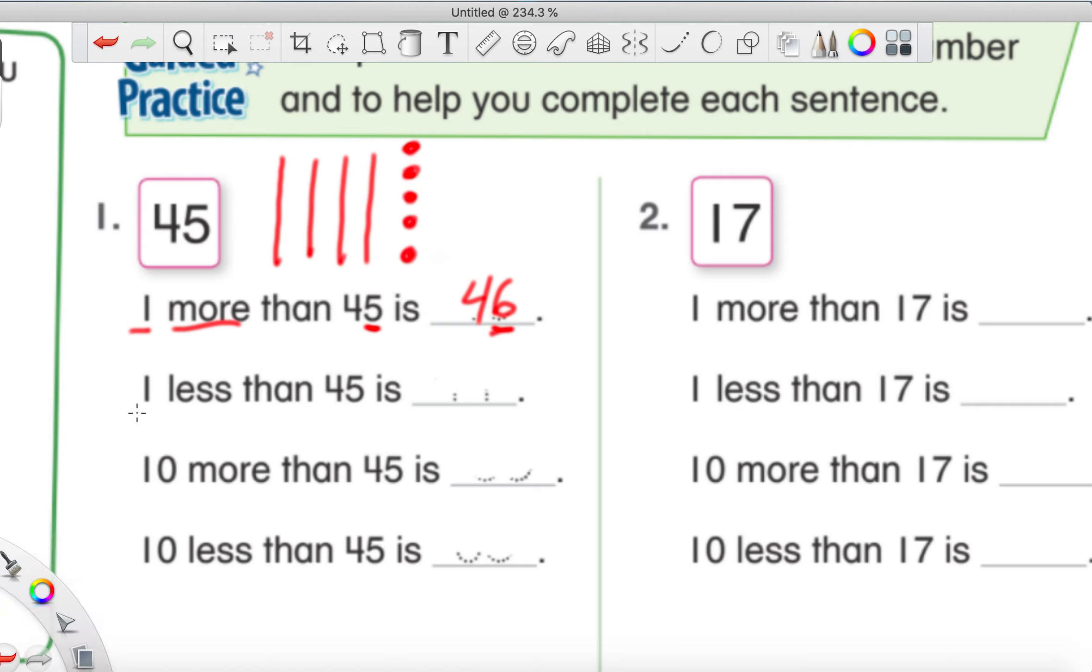Let's check out the next one: 1 less than 45. Now are we going to be changing our 4 or the 5? Which one is our 1s place? We're going to be changing that 5 because that's in our 1s place. If you have your manipulatives, your 10s and 1s, you can just kind of take one away. 1 less is taking one away. How many do we have now? We have 10, 20, 30, 40, 41, 42, 43, 44. So now we have 44. That 5 turned into a 4.